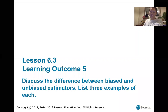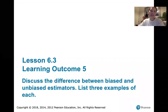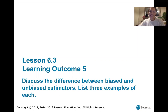In this video, we discuss learning outcome number five from Lesson 6.3, which is about the difference between biased and unbiased estimators. In this lesson, we will list three examples of each.